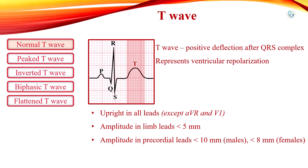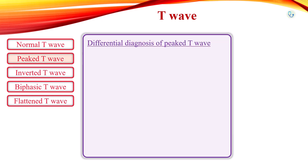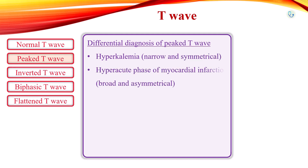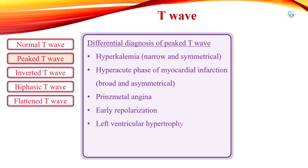Differential diagnosis of peaked T-waves includes hyperkalemia, early phase of myocardial infarction, Prinzmetal angina, early repolarization, left ventricular hypertrophy, left bundle branch block, and acute pericarditis.